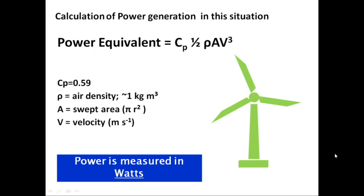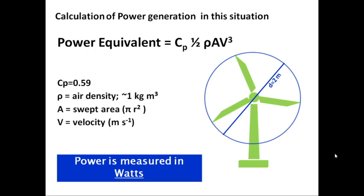Let us do some exercise for the calculation of power generation. If we have a windmill with a diameter of the swept area of 2 meters, then the radius will be 1 meter. If the speed of wind is 3 meters per second, what would be the power generated by this windmill? I am leaving this exercise to all of you after this lecture ends. Please try to calculate the power using the formula: Cp × ½ × ρ × A × V³. We will discuss its answer in the next lecture.